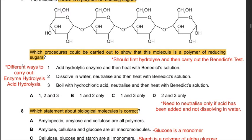Question 7: The molecule shown is a polymer of reducing sugars. Which procedures could be carried out to show this? Since it is a polymer, we first hydrolyze it, then carry out the Benedict's test. Procedure 1 uses enzyme hydrolysis: add a hydrolytic enzyme, then heat with Benedict's solution - correct. Procedure 3 uses acid hydrolysis: boil with hydrochloric acid, neutralize, then heat with Benedict's - also correct. Procedure 2 is wrong because we only neutralize if an acid has been added, not when dissolving in water. Hence the answer is C: 1 and 3 only.